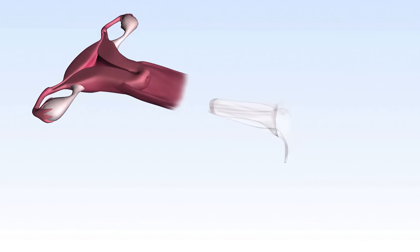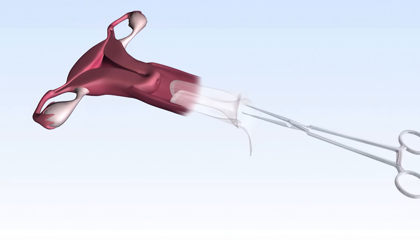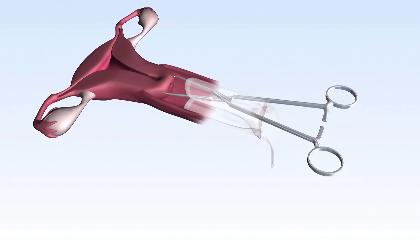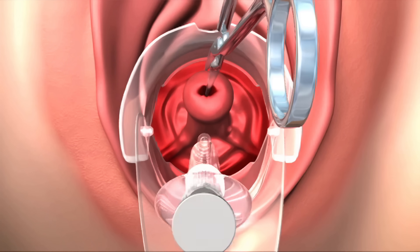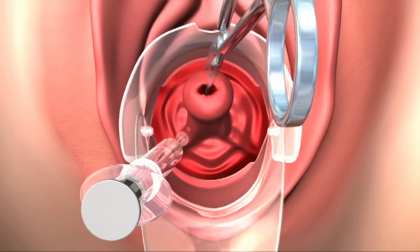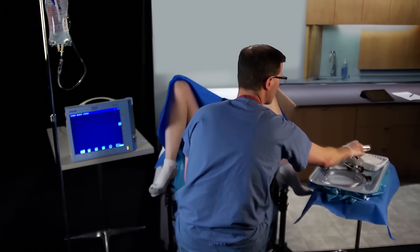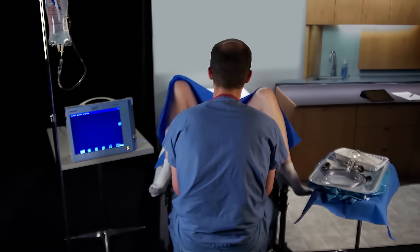An examination may be performed at this time to confirm the uterine position as well as the uterine size. A speculum is used to visualize the cervix, which is prepped with sterilizing fluid such as betadine, or as preferred by the physician. In some patients, a local anesthesia consisting of a paracervical block may now be performed. The speculum is then removed and the setup should now be completed, allowing for any anesthetic agent to take effect during this time interval.